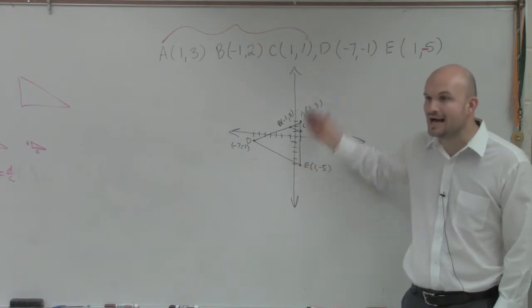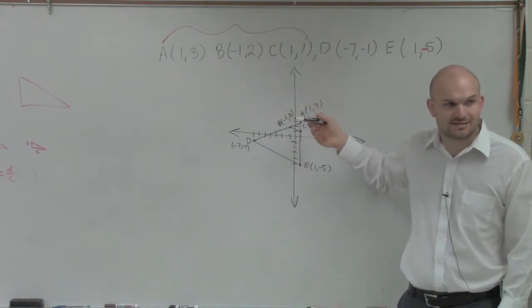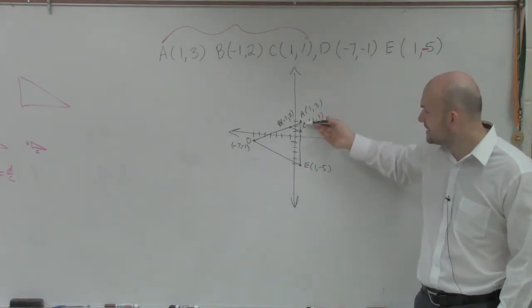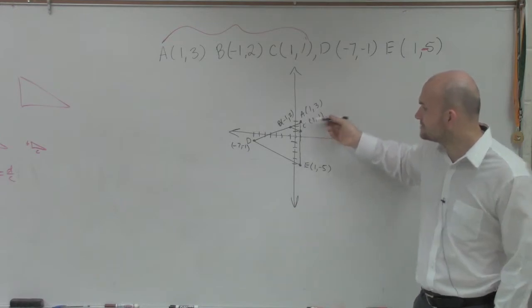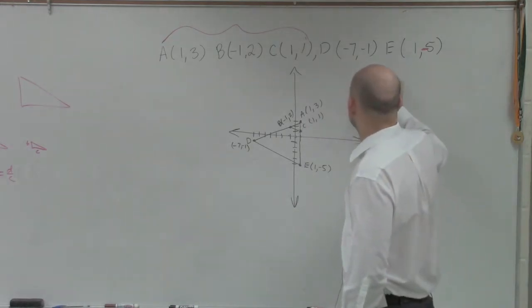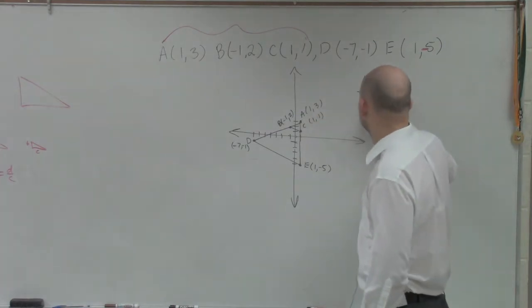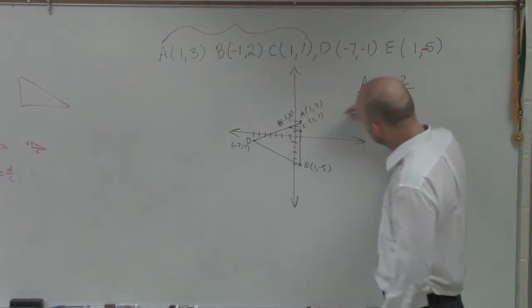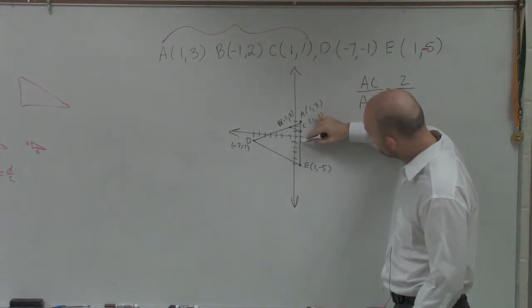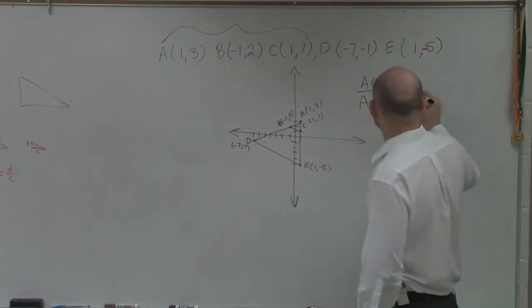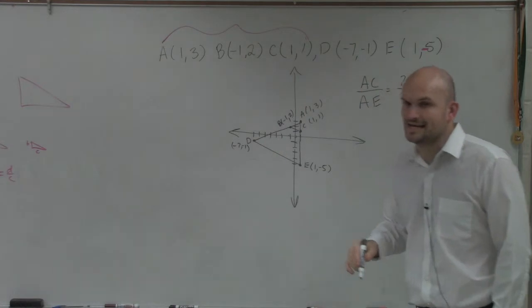When you have straight lines, you can easily count the lengths. So I can say AC is 2. So AC is to AE, which is the same thing as 2 is to 1, 2, 3, 4, 5, 6, 7, 8. Which is 2 is to 8.